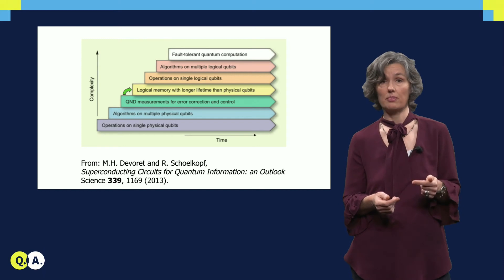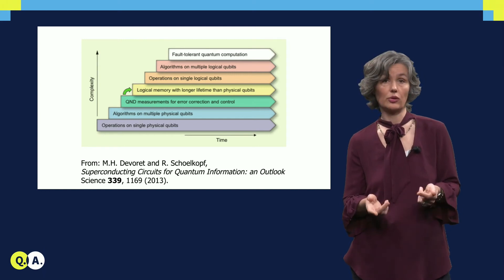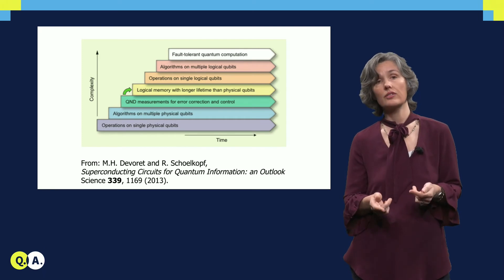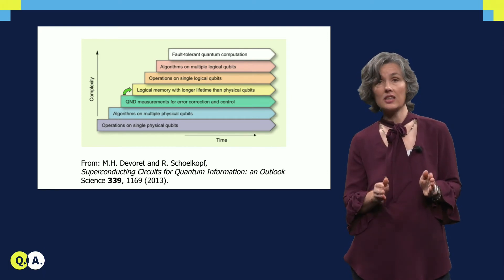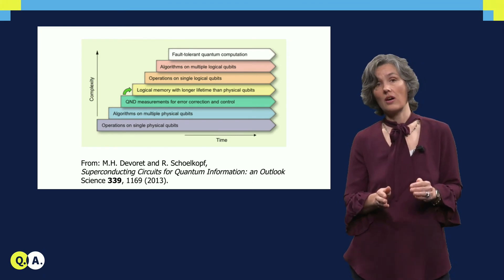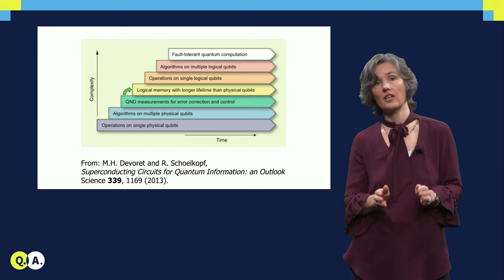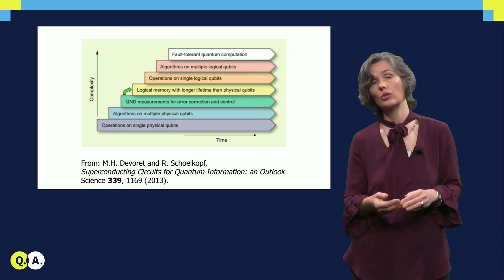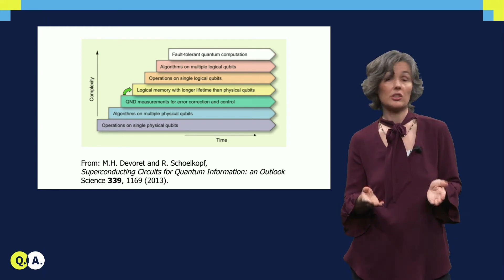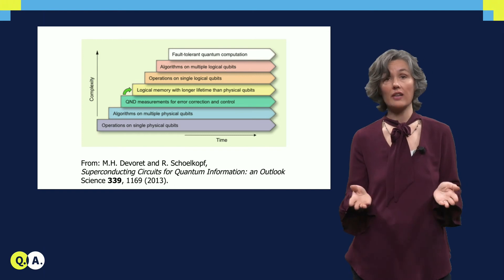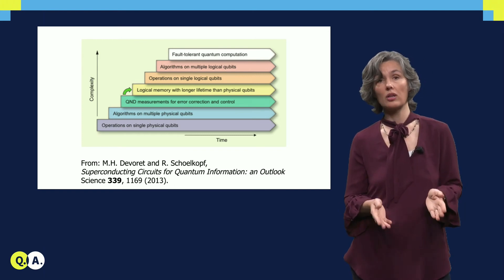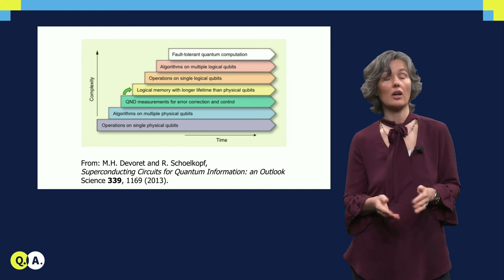Then a next step is to try and store a logical qubit using quantum error correction. And the idea is to store it for a time which is at least longer than any of its constituent qubits. So far, experiments at several labs have shown how to detect a single error using a 4 qubit code, and how to store a bit, just a regular classical bit, using 3 or 5 qubits.